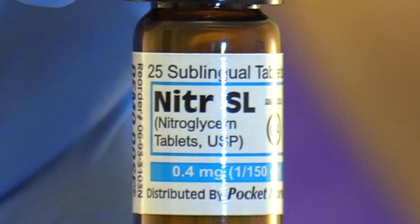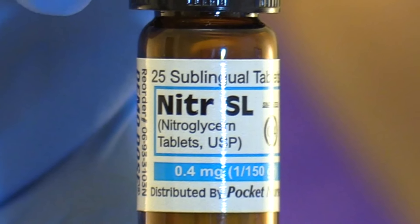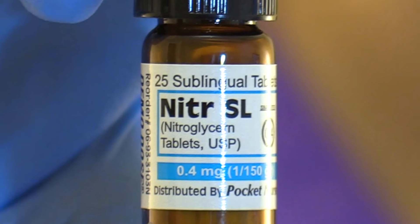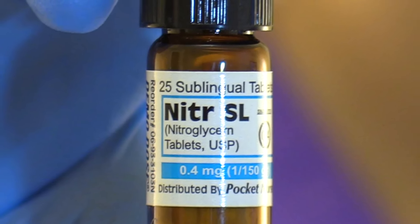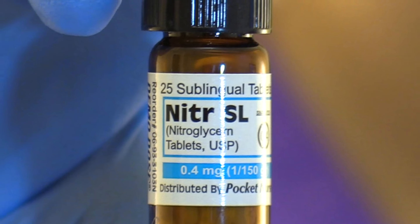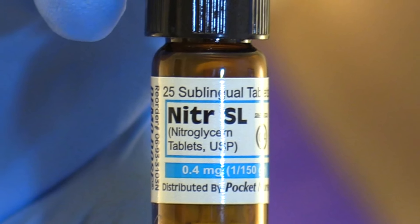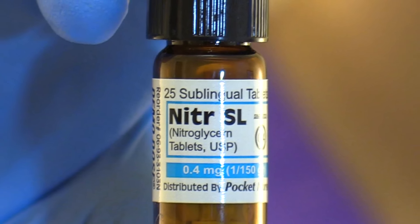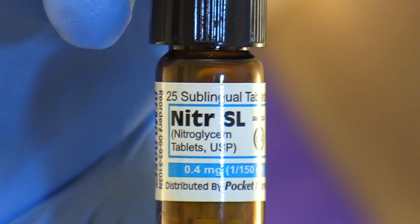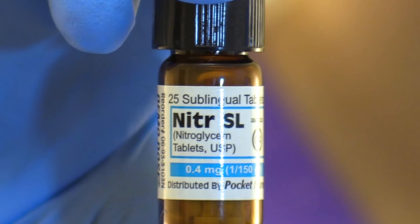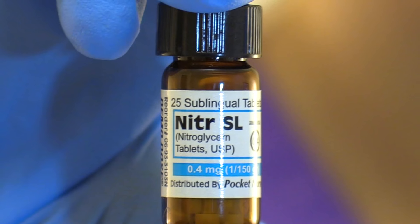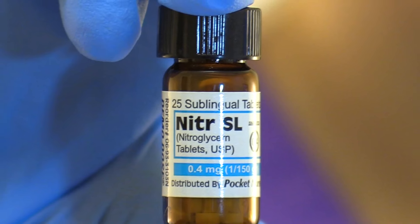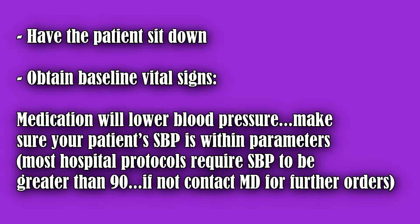Sublingual nitroglycerin comes in a dark vial, and this vial is dark for a reason — nitroglycerin is very sensitive and it doesn't need to come into contact with light, heat, or moisture. It's only good for three months once the bottle is opened.